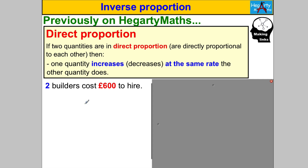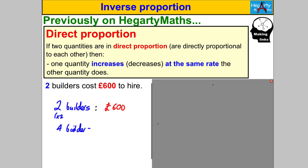Two builders cost 600 pounds to hire. As I've said before, you could write it as a ratio: two builders, 600 pounds. This is what I mean about them increasing at the same rate. Say I doubled my number of builders — multiplied by two — so I had four builders. How much would four builders cost me? Well, if two builders cost 600 pounds, four builders would cost me twice as much.